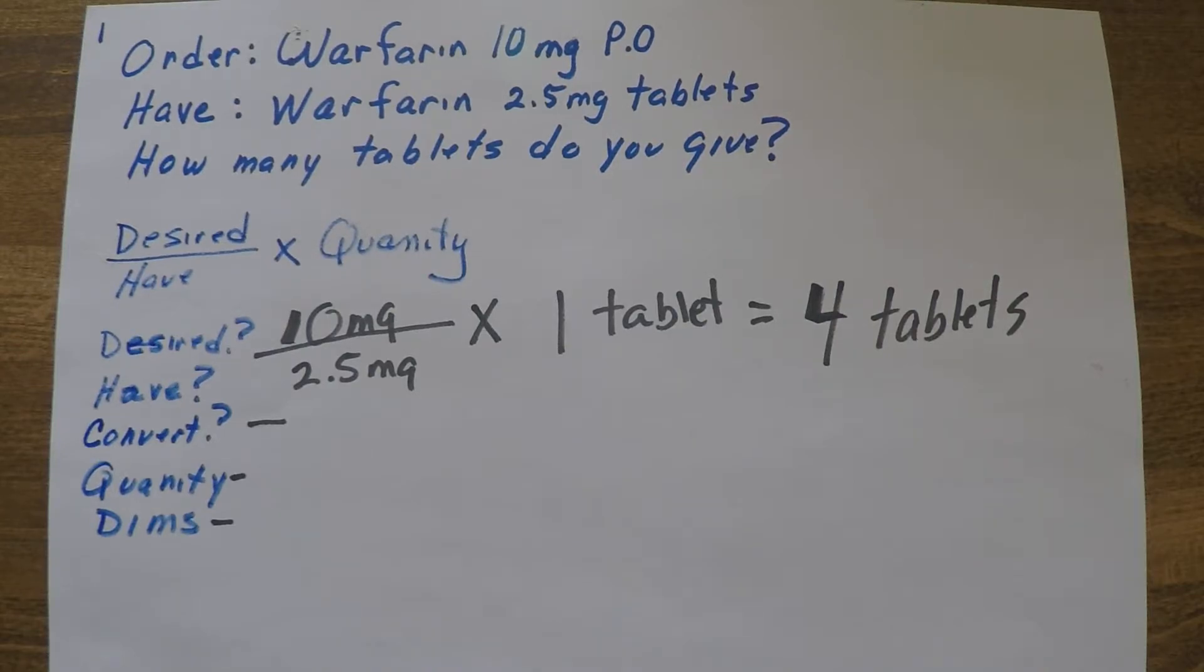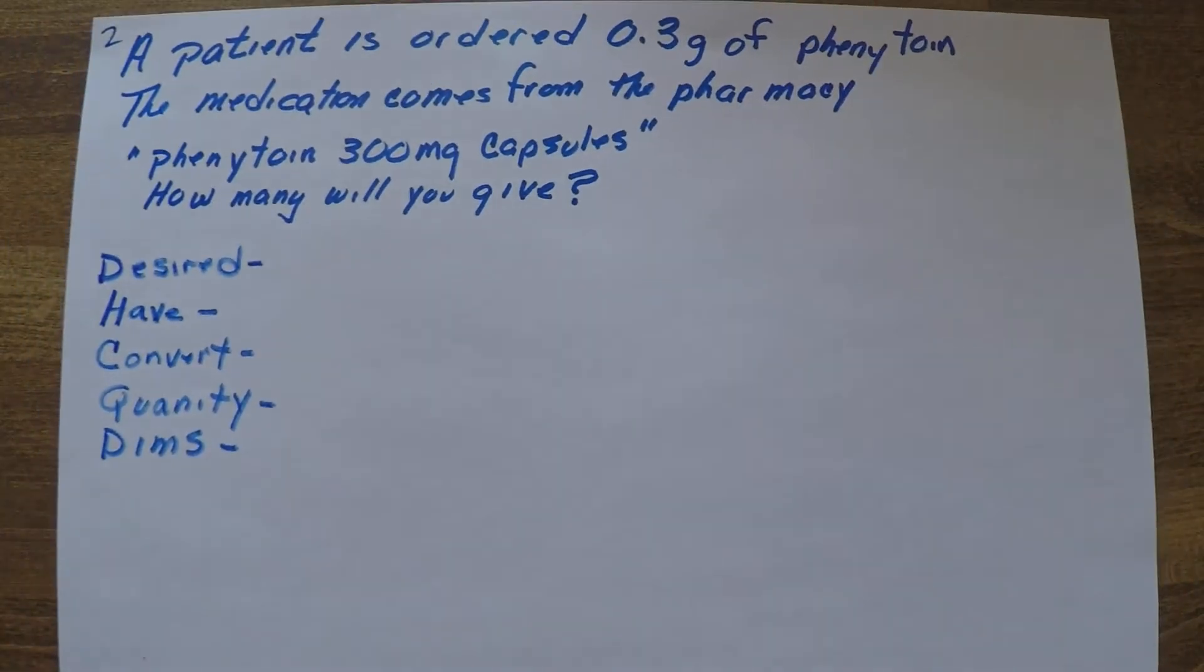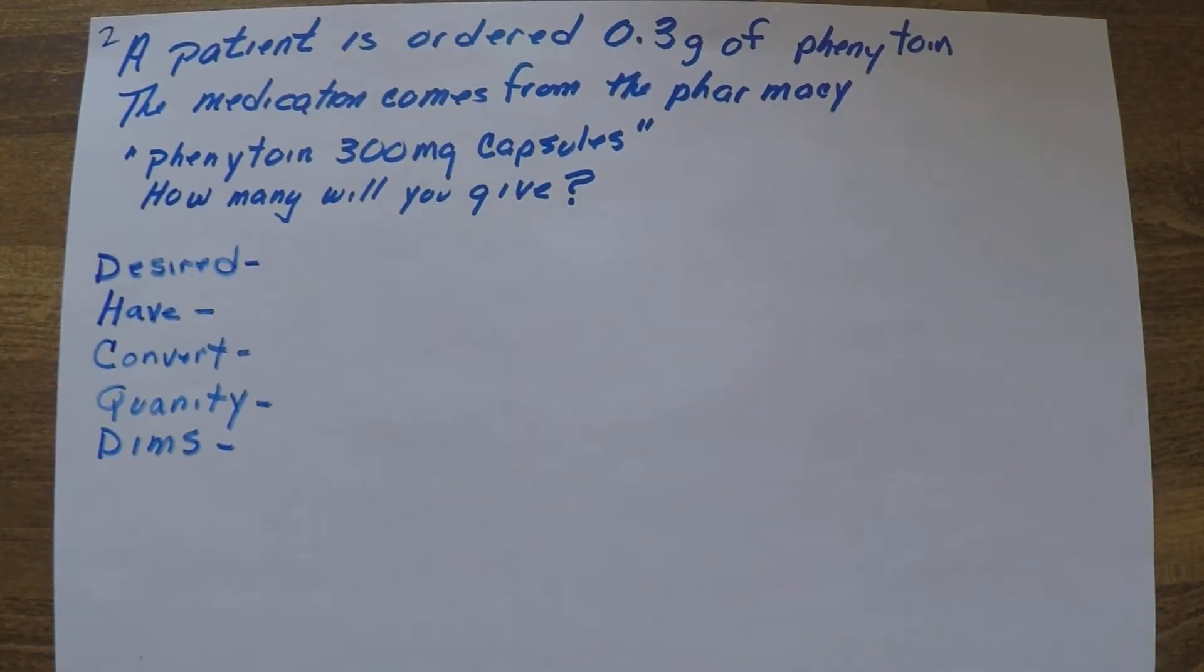Always do the DIMS test. And if you end up with something like a hundred tablets or four gallons or something way off the Richter scale, really kind of reconsider that. Look and think about it logically and see if that seems reasonable to you. Always do the does-it-make-sense DIMS test.